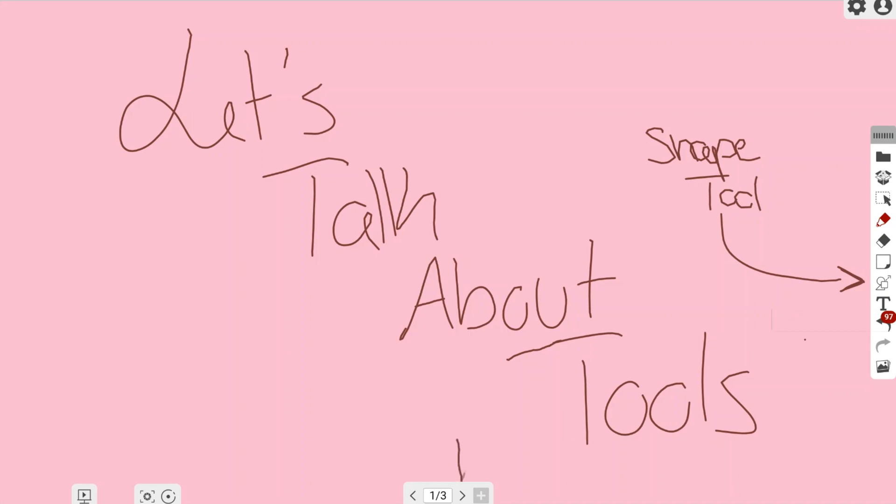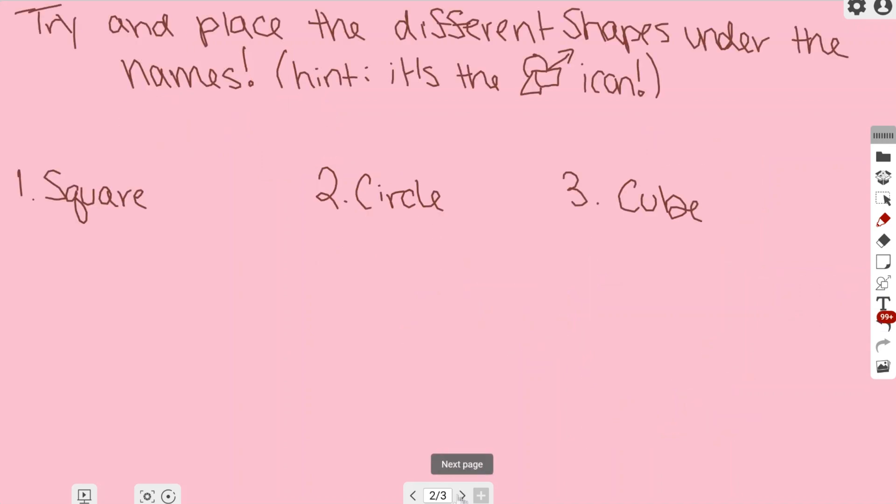I'm going to go to the next page to show you how to place these different shapes. As you can see, I have a prompt for us to choose a shape. We have a square, a circle, and a cube, so we're changing it up a little bit.